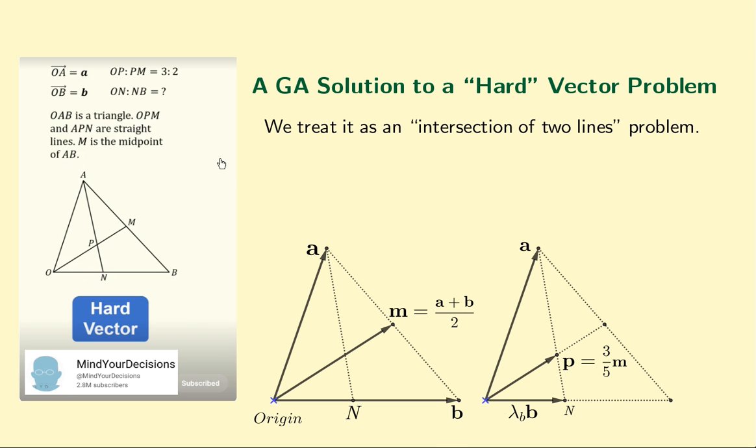According to the given information here, the point M is the midpoint of side AB, so in vector terms, the vector from the origin to that midpoint is A plus B over 2.